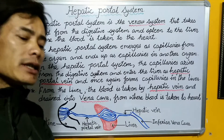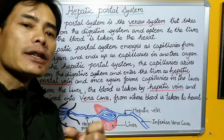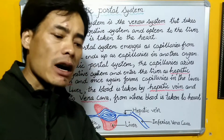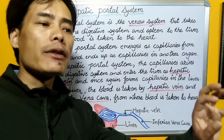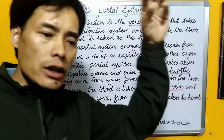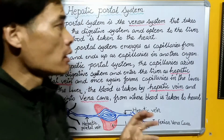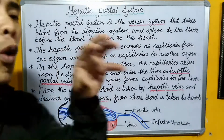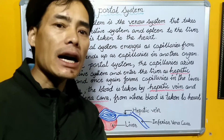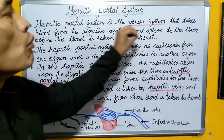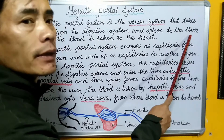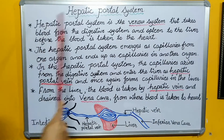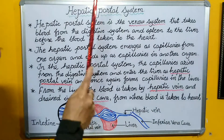We all know ultimately the blood is collected in the vena cava. And this vena cava ultimately takes away blood from the different organs into the heart. But before the blood from the digestive system is poured into the vena cava, it moves into the liver through the hepatic portal system.